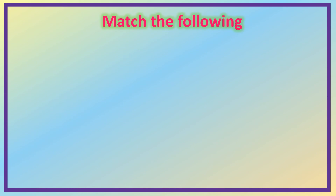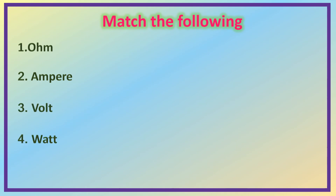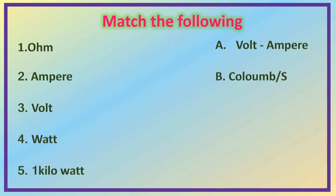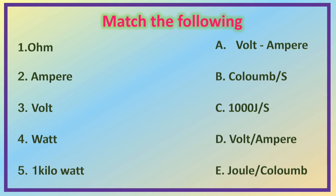Here is another very interesting matching. Follow me. First: 1 Ohm. Second: Ampere. Third: Volt. Fourth: Watt. Fifth: 1 Kilowatt. The options are — a: Volt/Ampere, b: Coulomb per second, c: 1000 Joules per second, d: Volt per Ampere, e: Joule per Coulomb.